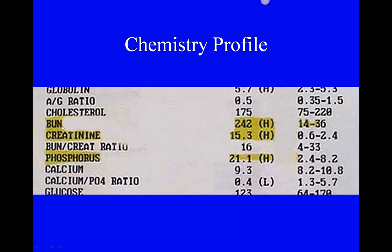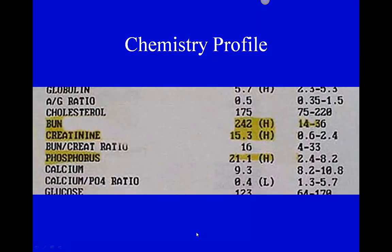Here's another chemistry profile. The BUN and creatinine are very elevated, so this person either has acute or chronic renal failure - their body is not clearing waste products as it should. It could be increased waste products, but more likely a problem with the kidneys getting rid of waste. Chemistry profiles are done on blood samples. With kidney involvement, it's not unlikely to also have problems with electrolytes, and phosphorus is a mineral regulated by the kidneys.